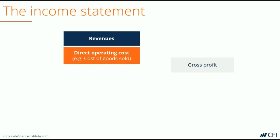Gross profit is equal to revenue minus cost of goods sold. If we take the gross profit and divide it by the revenue, we calculate the gross profit margin.